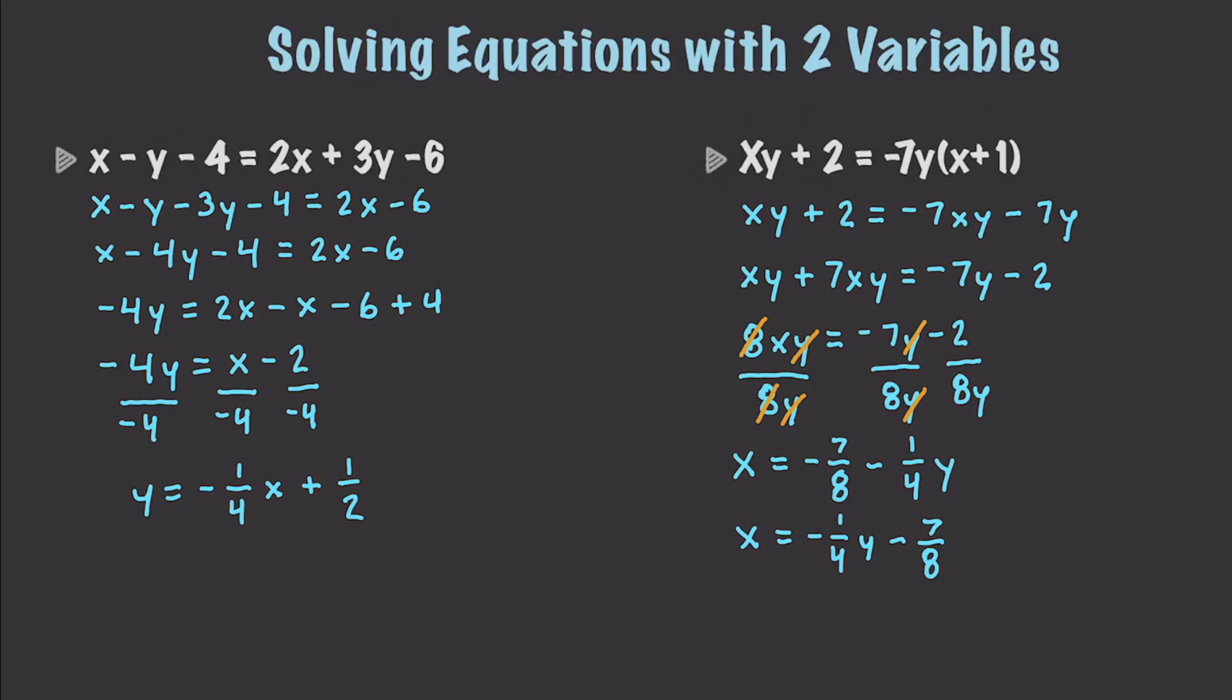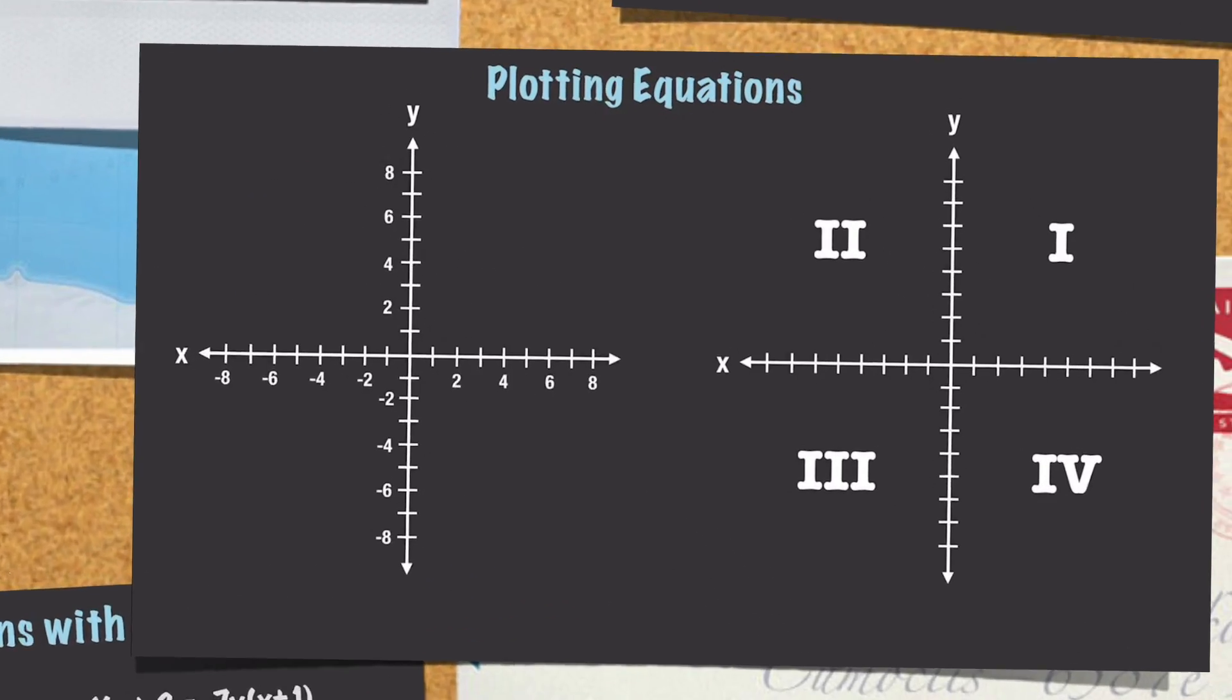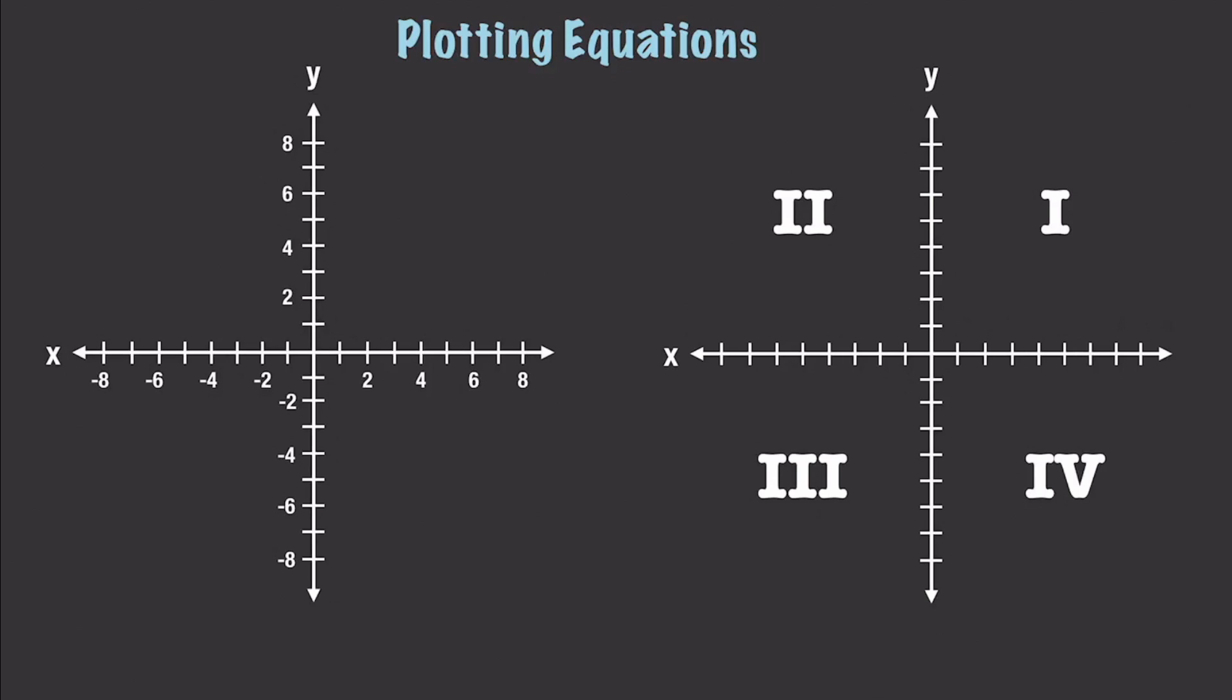And now I want to talk about plotting equations. Previously we graphed on the number line. And this time what we're going to do instead is we're going to move into two dimensions and graph on the coordinate plane, which is what you see here, two examples of. And we're going to use coordinate planes whenever we are working with two variables. And a coordinate plane is just two perpendicular lines. The horizontal line, which goes from left to right, is called the x-axis. And the vertical line, which goes up and down, is called the y-axis.